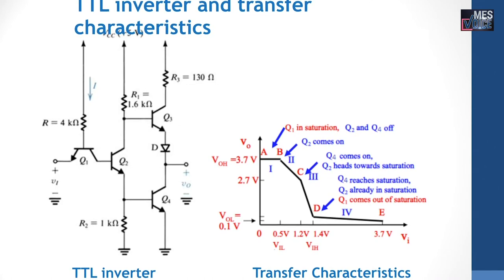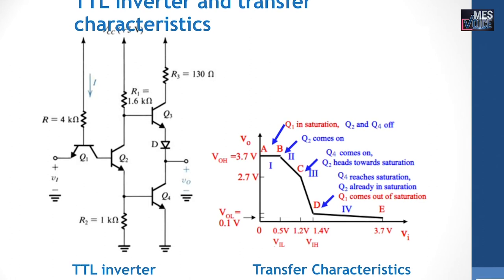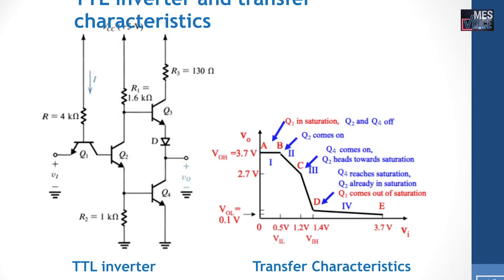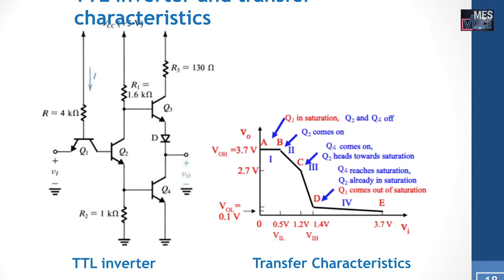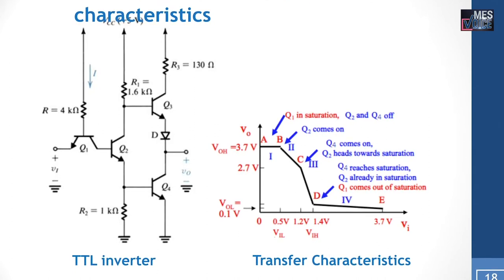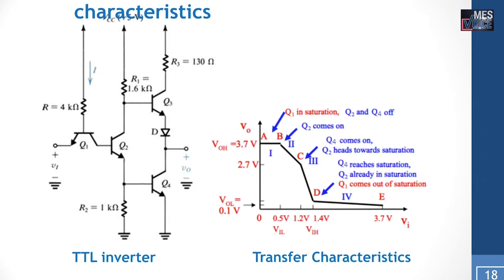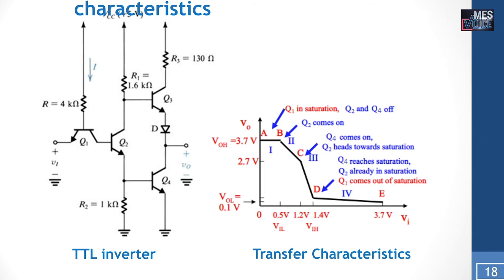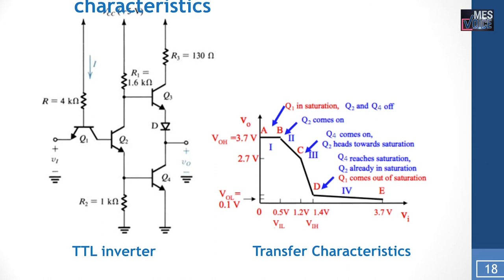When the input increases, some current gets directed into the base of Q2, so it comes on in the active mode — point B. The collector current of Q2 increases, so the IR drop across R1 increases and output voltage drops from point B to C. As Q2 is ON, it provides base current for Q4, and Q4 comes on in active mode — point C. When input further increases, more current gets directed to the base of Q2, moving it into saturation — C to D. Q2 provides base current to Q4, and Q4 moves into saturation — point D. Further increase directs all current to the collector of Q1, Q2 gets more current and moves deeper into saturation — points D to E. Similarly, Q4 moves deeper into saturation at point E.